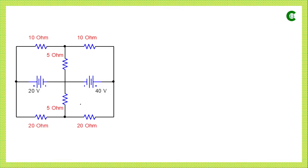This is a DC electrical network and all the energy sources or voltage sources in this circuit are independent, meaning their values are fixed and constant — their values don't depend on the voltage drop across any other component or current through any other component in the circuit.